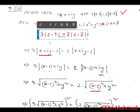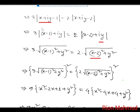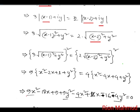Now the second problem: modulus of Z minus 1 is equal to 2 modulus of Z minus 2. Let Z equal to x plus iy. The real part of Z minus 1 is x minus 1, and the real part of Z minus 2 is x minus 2. The imaginary part is y in both cases.